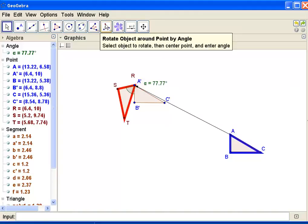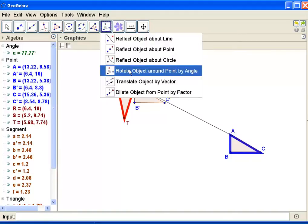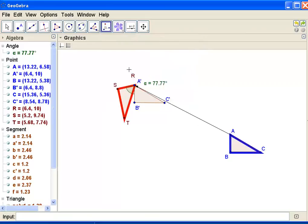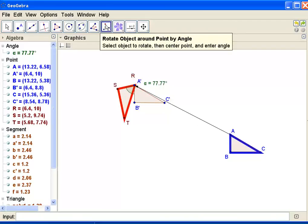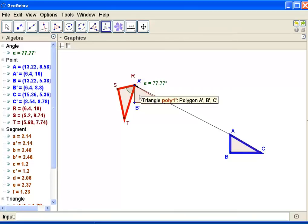My rotation tool is right here. I'm going to rotate an object around a point by an angle. And I need to select the object to rotate, then the center point, then the angle.